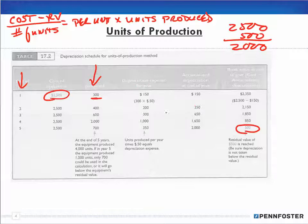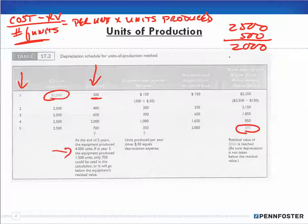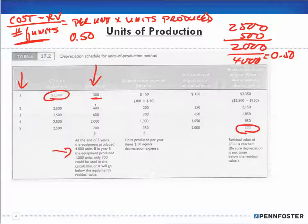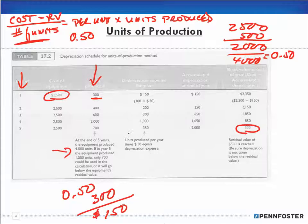We also need to know the total units the equipment will produce over its life - in this case, 4,000 units. So we take our $2,000 and divide it by 4,000, giving us 50 cents per unit. Then we take that 50 cents times the units produced in year one - 300 units - and that gives us a depreciation amount of $150 for year one.